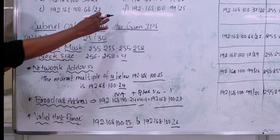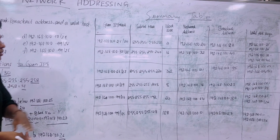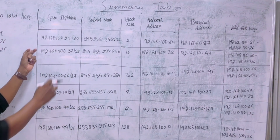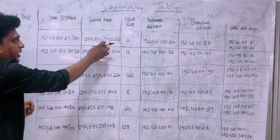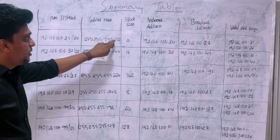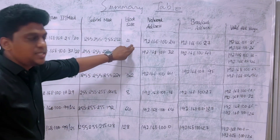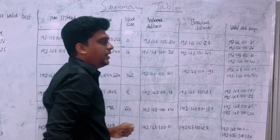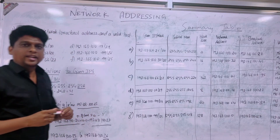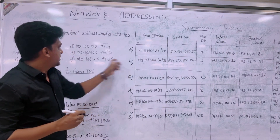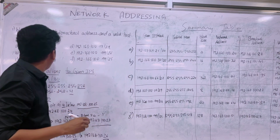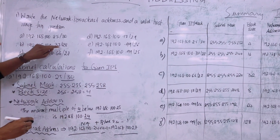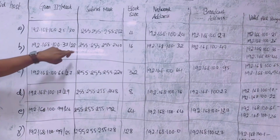Here is a summary table of all the values. You can see the given IP, the subnet mask, the block size identified as 4, the network address, the broadcast address, and the valid host range. In a similar way, for subdivision B, the IP address 192.168.100.37/28 has been taken.